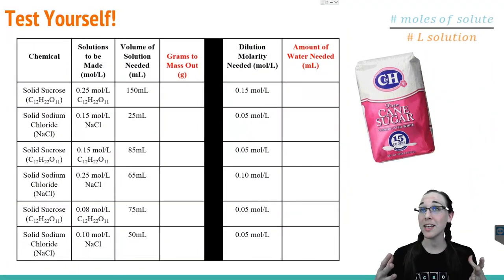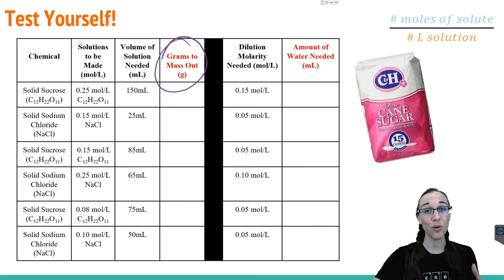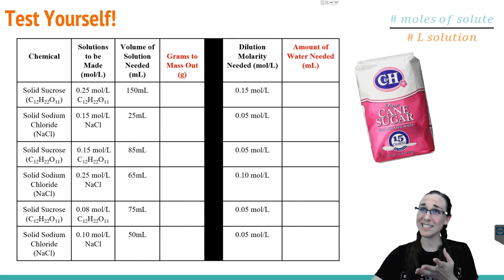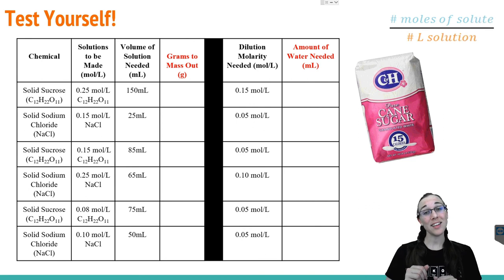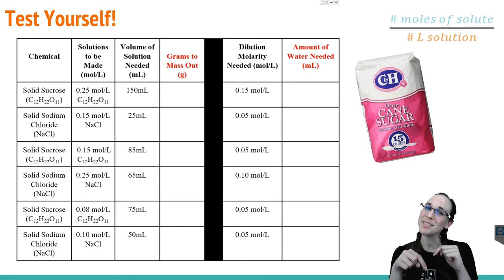Make sure you test yourself before you wreck yourself. See if you could figure out both how to make the solution, the grams to mass out in a lab, for the following sugar and salt water concoctions. If you wanted to make, for example, 150 milliliters of 0.25 molar sugar solution, how many grams of sugar should you measure out? Additionally, if you made that solution but now needed to dilute it to, say, 0.15 molar concentration, what's the amount of water you would need to add to it? See if you can fill in those empty columns and if you have any questions, feel free to leave them in the comments below.